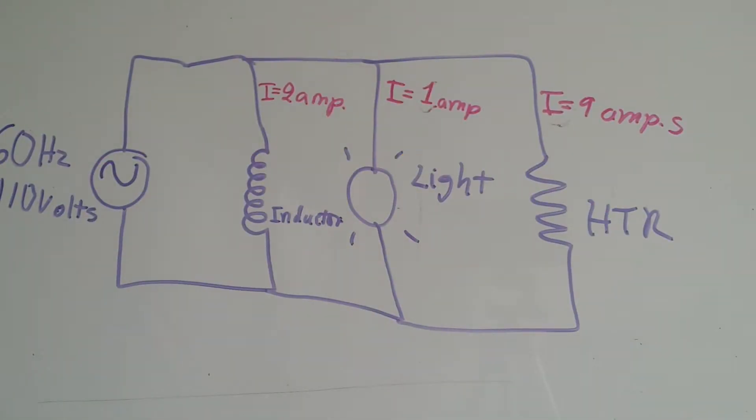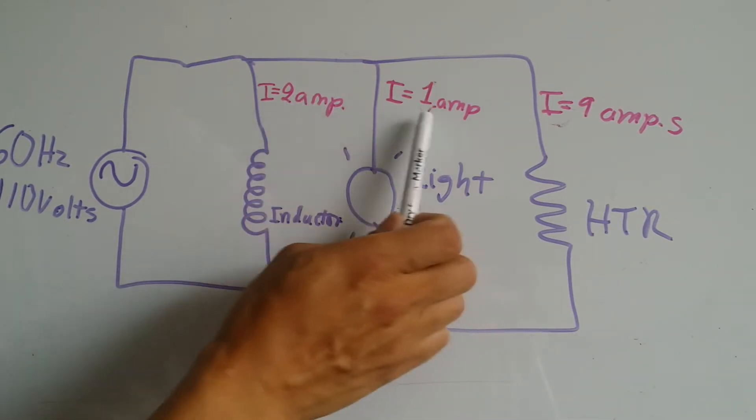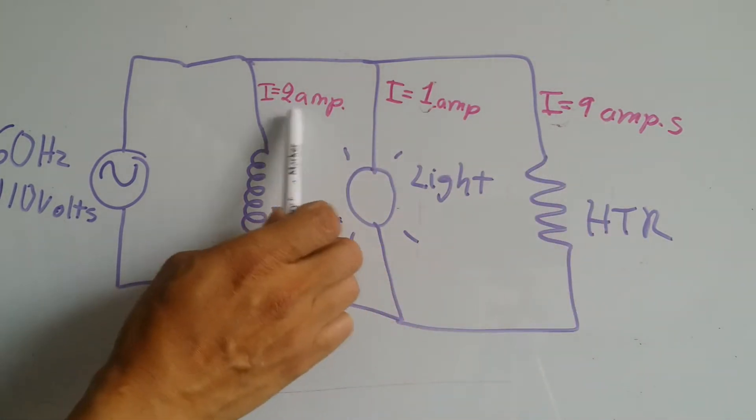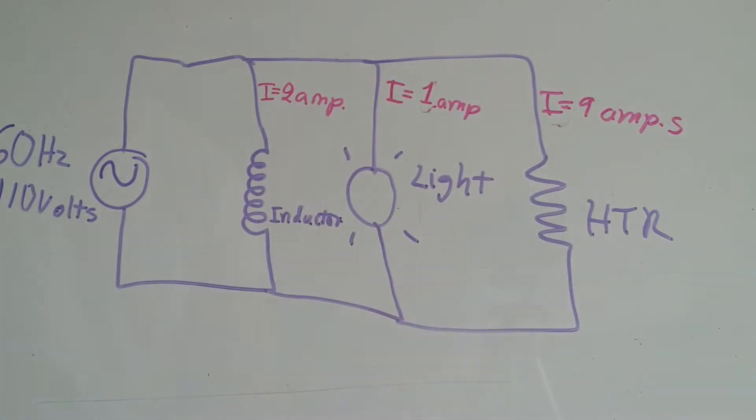To better understand calculations for inductors, I set up this basic schematic where I have a source of power which is AC, 60 Hertz, 120 volts, and I am going to be powering in parallel a heater, a light, and an inductor.